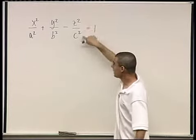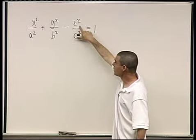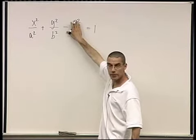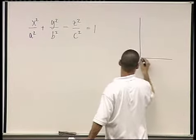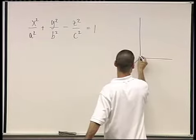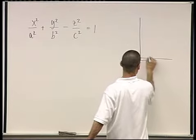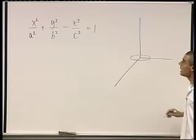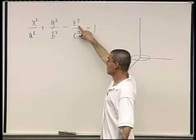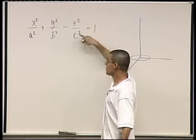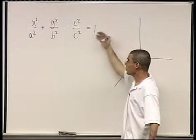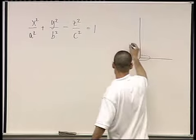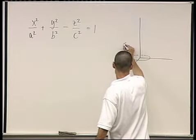For every value of z you plug in — for example z = 0 — you get an ellipse. Here for z = 0 we get an actual ellipse. When you plug in z = 1, the constant z²/c² moves to the other side, giving you 1 plus a constant, and you get an ellipse again, with a bigger diameter. So we get ellipses which get bigger and bigger.